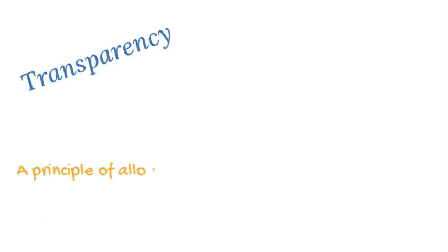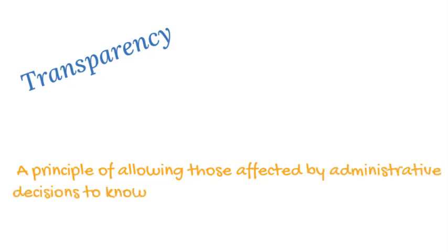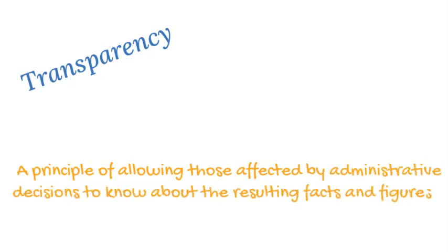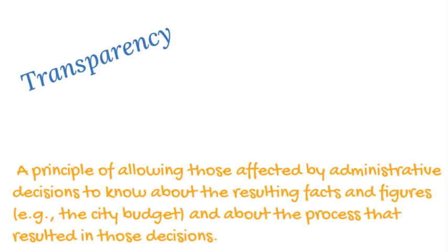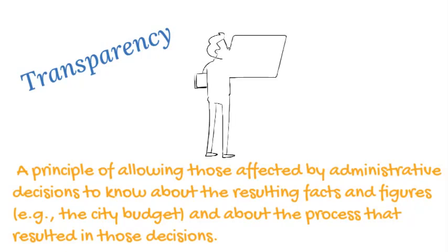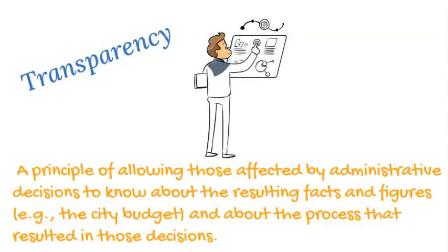Transparency. A principle of allowing those affected by administrative decisions to know about the resulting facts and figures, e.g., the city budget, and about the process that resulted in those decisions. This also means that all information is freely available and directly accessible to those who will be affected by such decisions and their enforcement, provided in easily understandable forms and media.